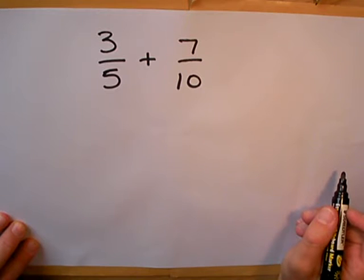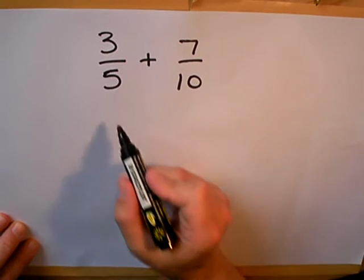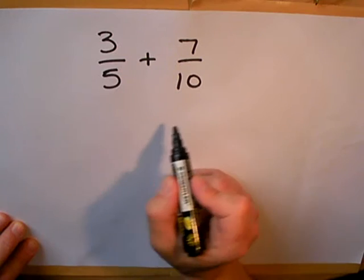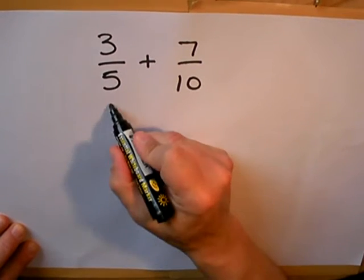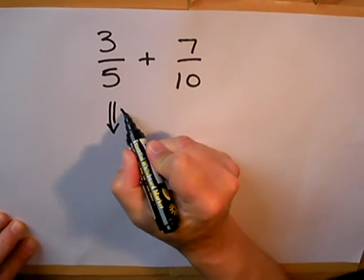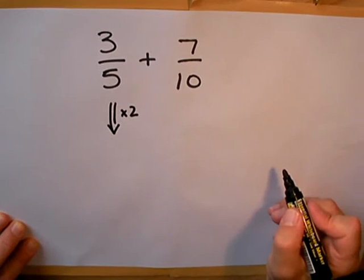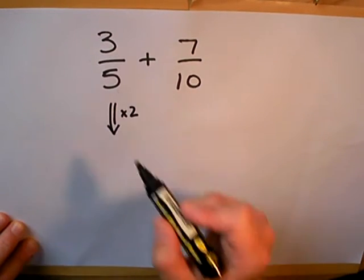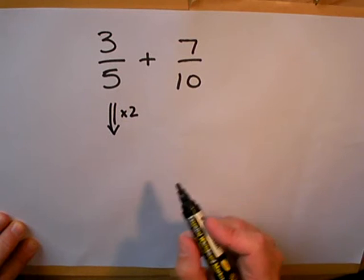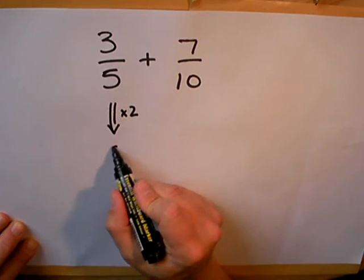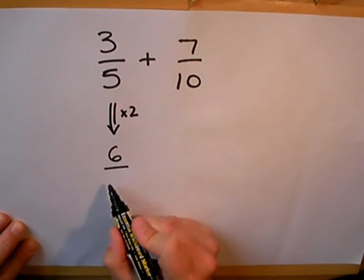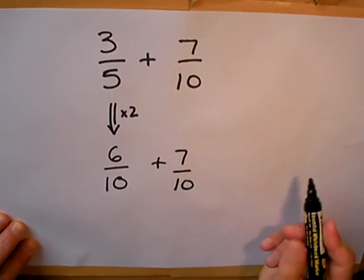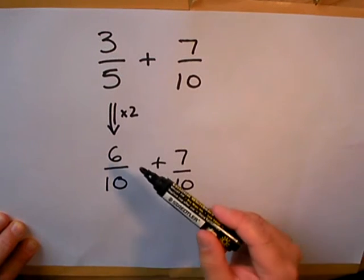In this particular example, I can turn fifths into tenths because I can easily multiply 5 into 10, so the way I do that is by multiplying by 2. Now remember, if I'm multiplying the bottom number by 2, I must remember to multiply the top number by 2 as well so that I have the same fraction. So 3 times 2 is 6 and 5 times 2 is 10.